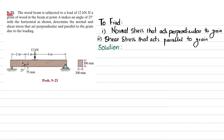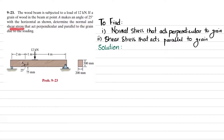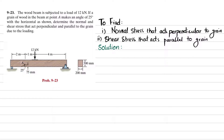Welcome back. Problem 9-23. The wood beam is subjected to a load of 12 kilonewtons. The grain of wood in the beam at point A makes an angle of 25 degrees with the horizontal. Determine the normal and shear stress that act perpendicular and parallel to the grain.